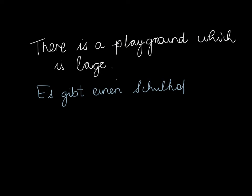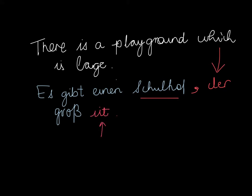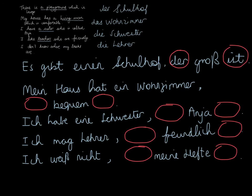Let's look at the first sentence: there is a playground which is large. I've done the first part of the sentence for you: Es gibt einen Schulhof. Now when it comes to replacing the word which, I have to remember that the word which comes in front of it is masculine. So first I put a comma in and then I write der, because der is masculine. Then I write the rest of the sentence — groß — and finally finish off with ist. This is an example of word order three: when you use a relative pronoun to make a relative clause, your verb has to come at the end.